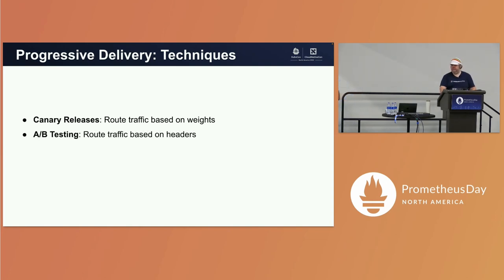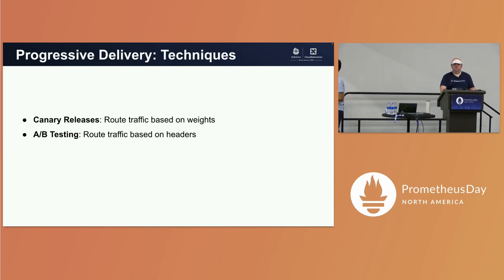The next is A/B testing — I'm guessing this is more popular amongst you. It's a pretty old way of testing. You have some beta users, and the way you differentiate between those beta users is based on the requests they generate, which have headers on them. You use those headers to differentiate between your beta users.